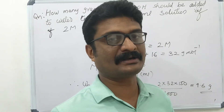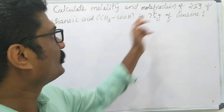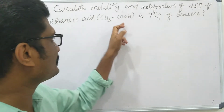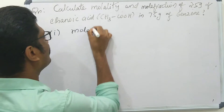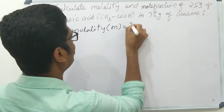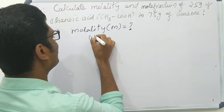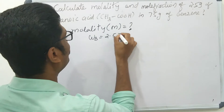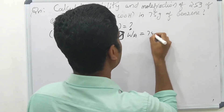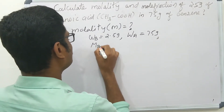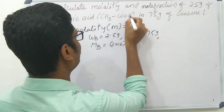Calculate molality and mole fraction of 2.5 gram of ethanoic acid (CH3COOH) in 75 gram of benzene. So we know: 2.5 gram of ethanoic acid in 75 gram of benzene. The molar mass of solute CH3COOH is: 2×12 for carbon, plus 4×1 for hydrogen, plus 2×16 for oxygen.